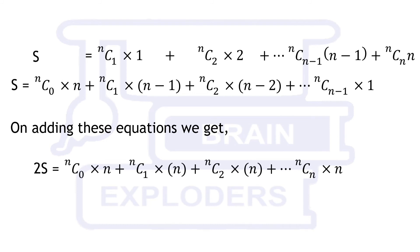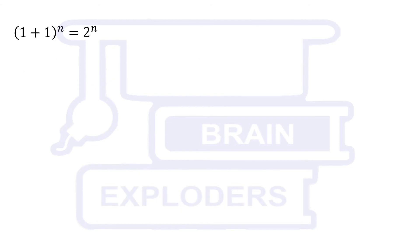We get 2s equals to n times nc1 plus nc2 plus nc3 up to ncn. Sum of these series can be calculated by the binomial expansion of nth power of 1 plus 1.